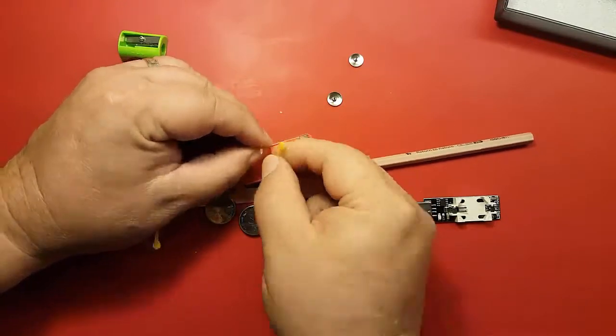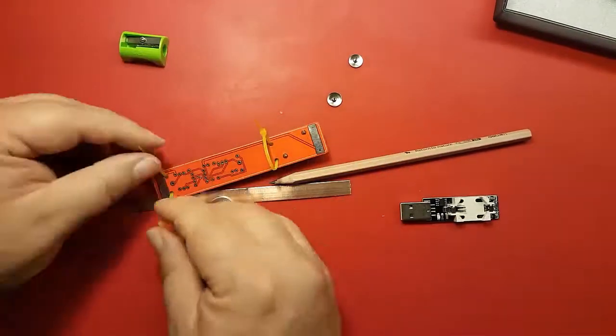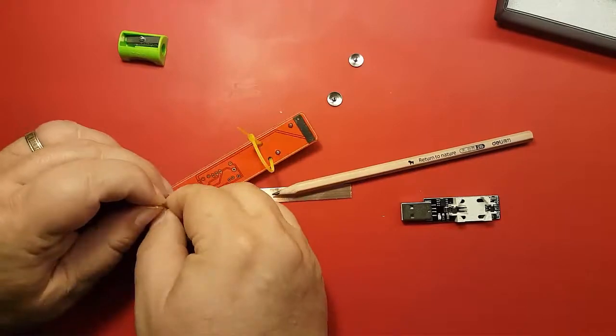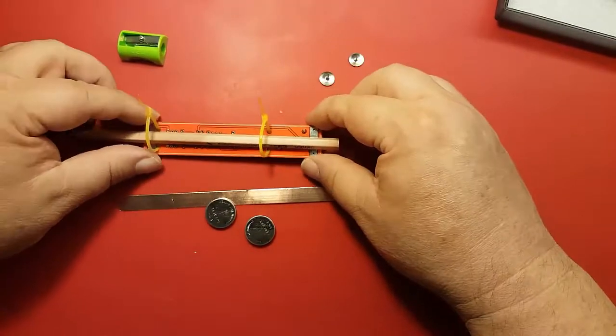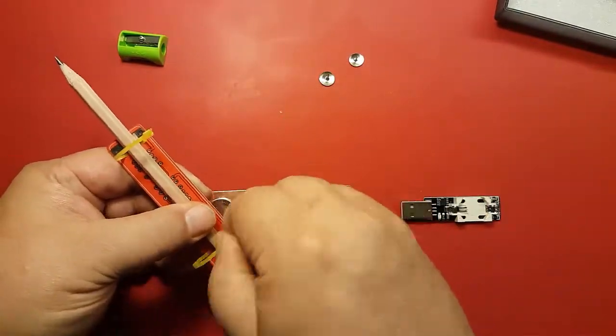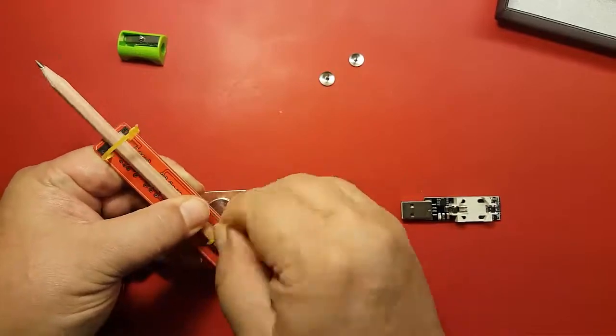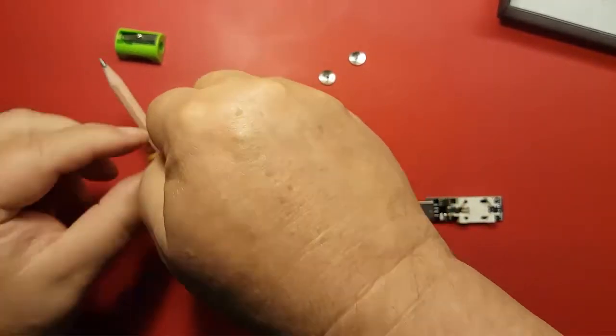I found it a little easier to start the zip ties without the pencil first, and then put the pencil in and tighten it up. When you put the pencil in, make sure that more of the bottom of the pencil sticks out, because that's the part that you're going to hold.